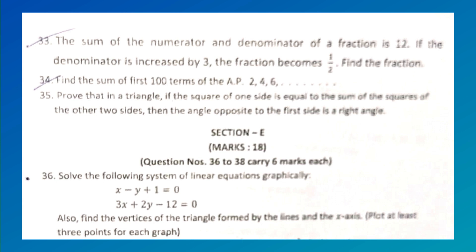Find the sum of the first 100 terms of the AP 2, 4, 6... Prove that in a triangle, if the square of one side is equal to the sum of the squares of the other two sides, then the angle opposite to the first side is a right angle. Solve the following system of linear equations graphically: 3x - y + 1 = 0 and 3x + 2y - 12 = 0. Also find the vertices of the triangle formed by the lines and the x-axis.